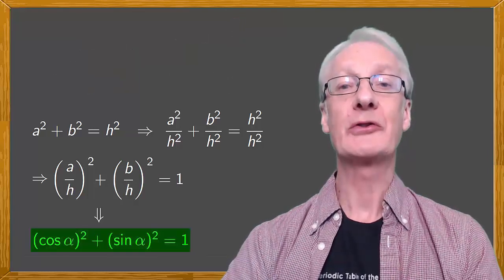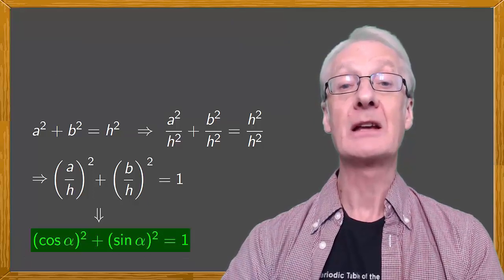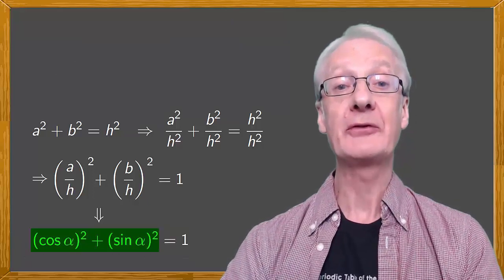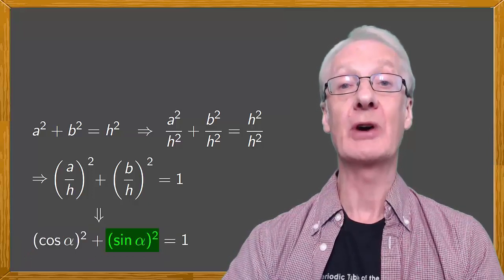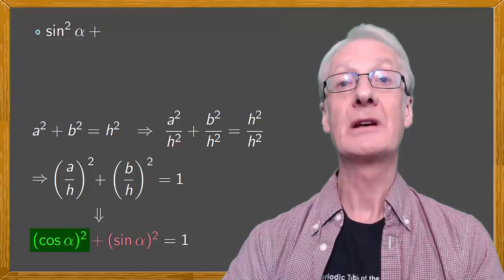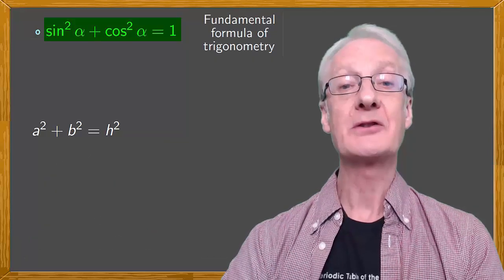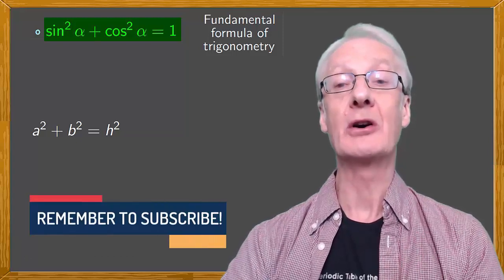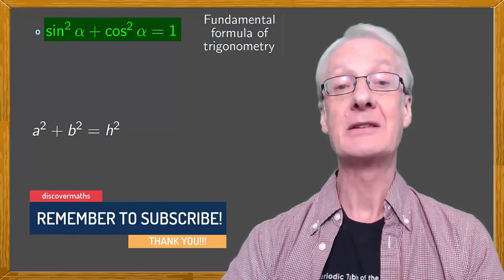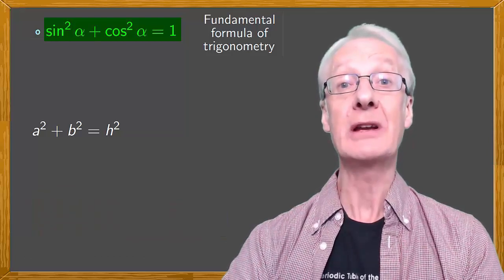So we've obtained what's known as the fundamental formula of trigonometry. Let's switch around the terms on the left, putting the sine of alpha squared first, so that we have sine squared alpha plus cos squared alpha equals 1. As you can see, the fundamental formula of trigonometry is nothing more than a trigonometric version of the Pythagorean theorem.